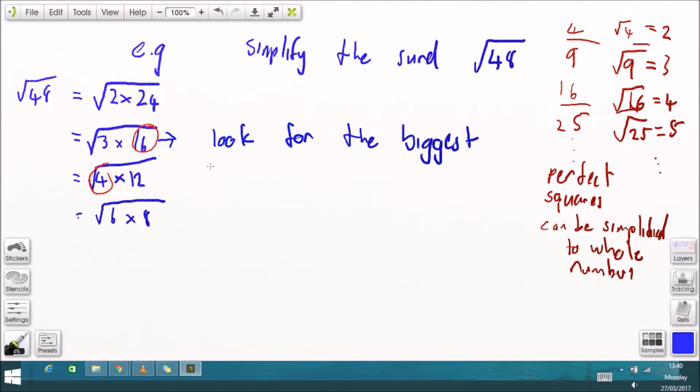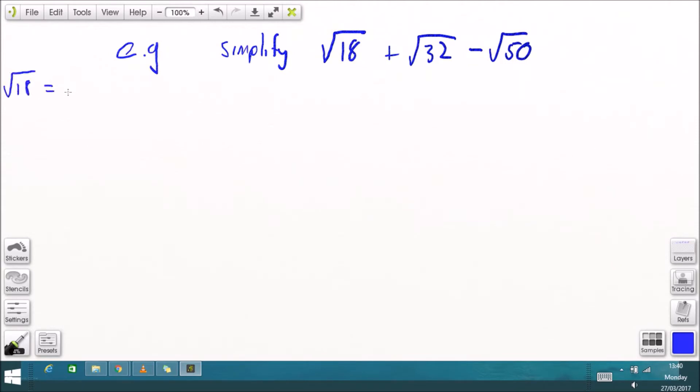so all this means is what you're best to do is look for the biggest perfect square that you can find as a factor of your original number so the biggest perfect square as a factor of 48 was 16. You don't have to but it makes it faster and easier to get to the same answer.